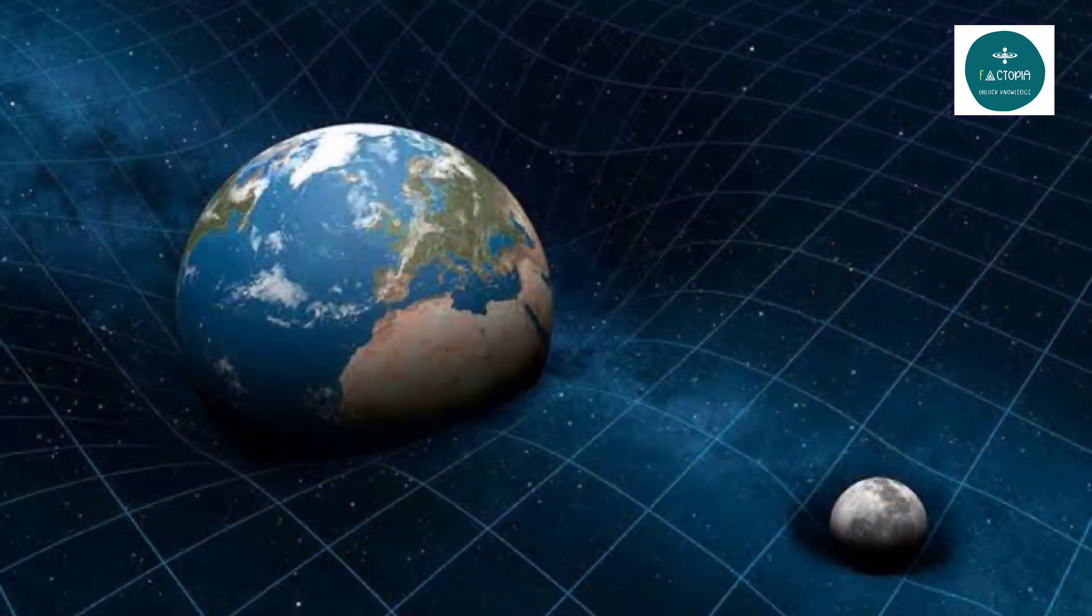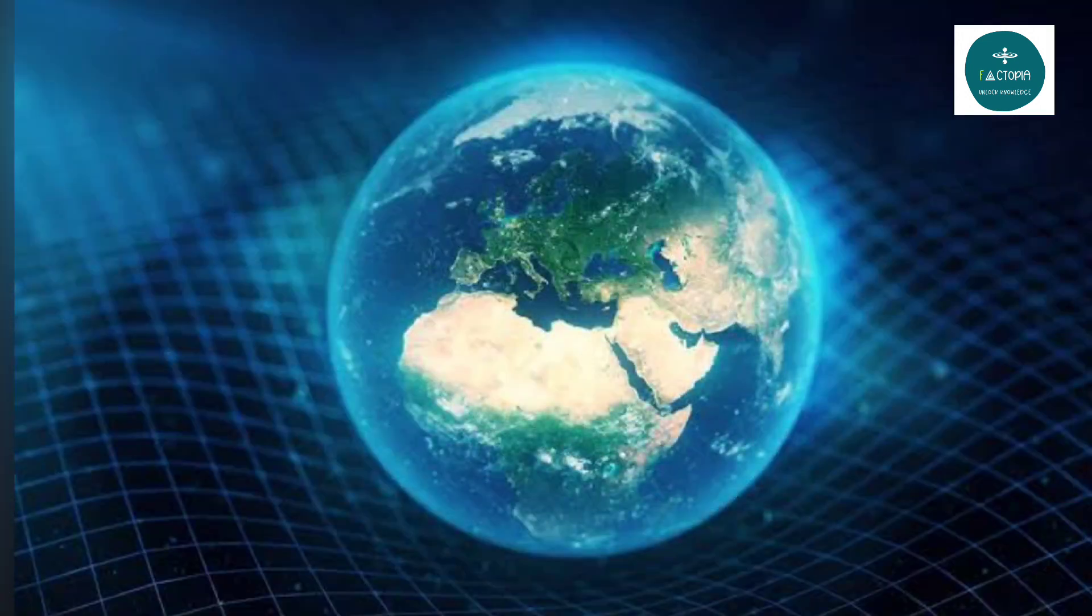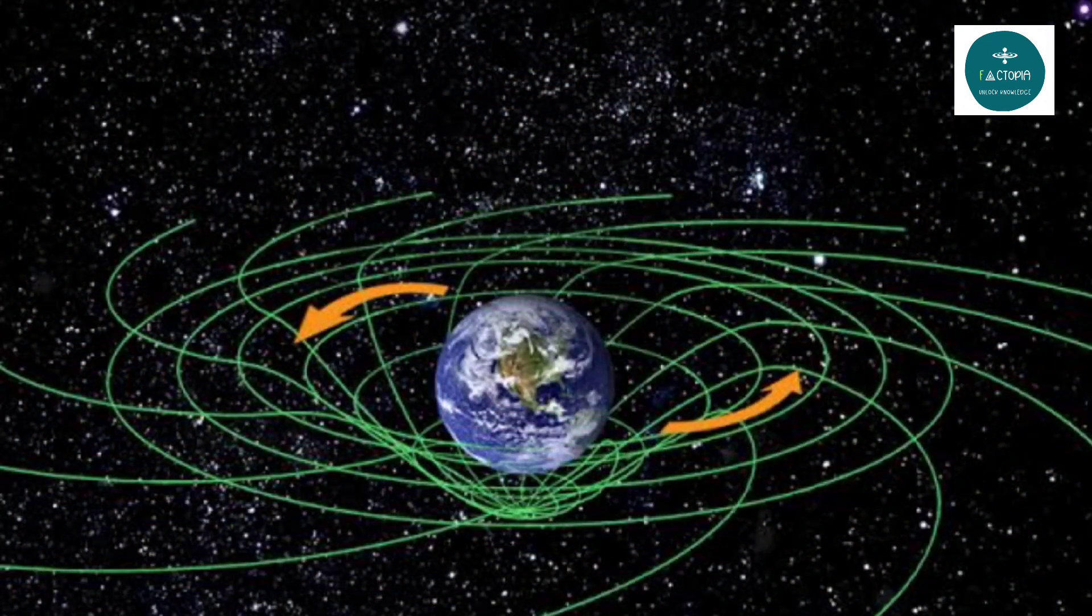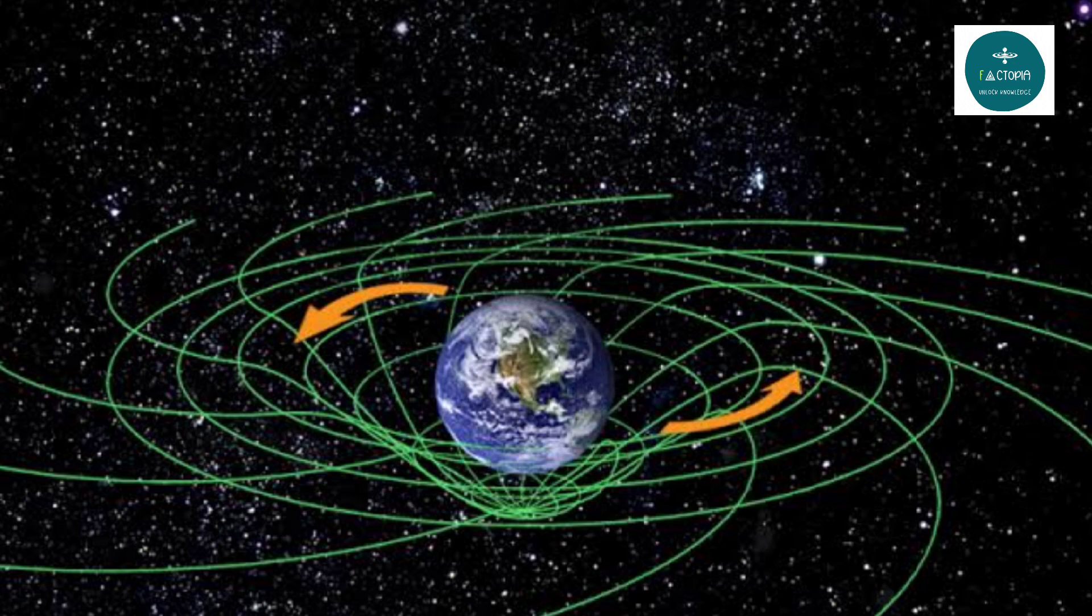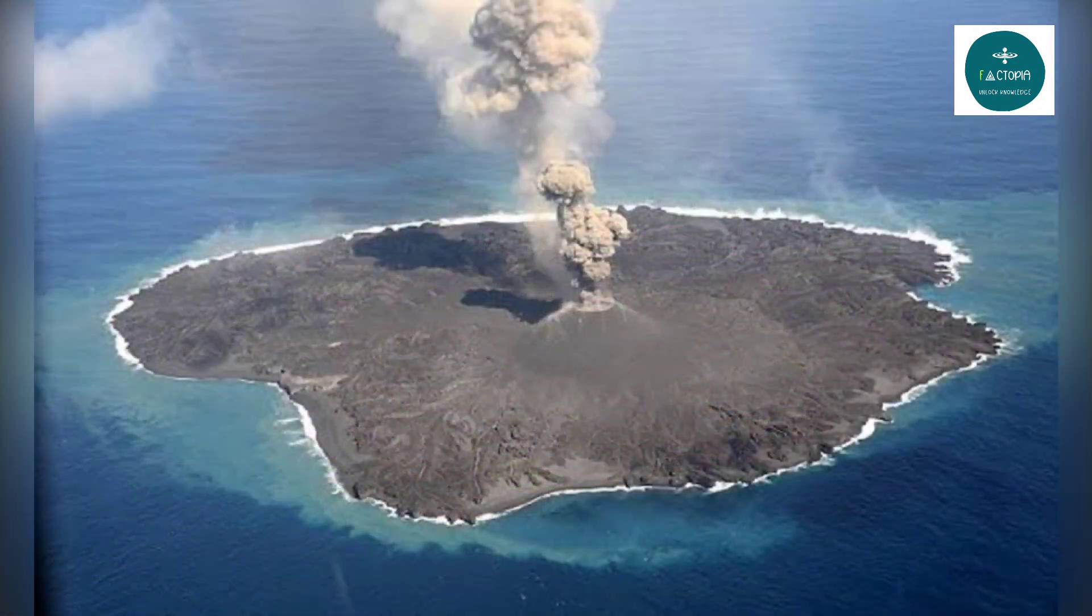Gravitational effects. The Earth's rotation generates a centrifugal force that counteracts the force of gravity, causing a slight bulge at the equator. If the Earth stopped rotating, this bulge would redistribute, potentially causing massive geological changes, including the flooding of coastal areas and the emergence of new landmasses.